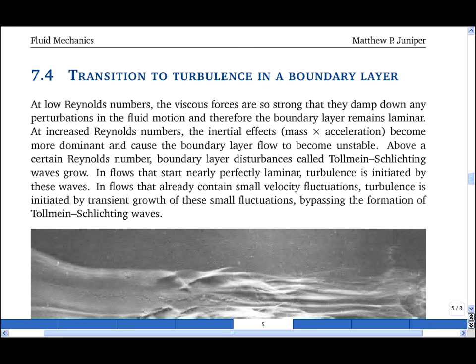If the free stream is exceedingly smooth, then the first motion observed is a wavy motion called a Tolmaine-Schlichting wave. However, if the free stream already contains some perturbations, such as turbulence, then these can trigger transition to turbulence directly within the boundary layer.